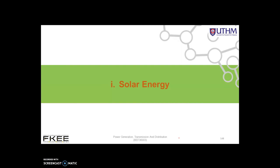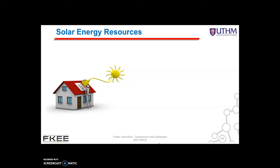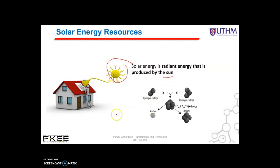Solar energy is the most important source of energy available to the Earth and its inhabitants. Solar energy is radiant energy produced by the sun. The sun makes energy in its inner core in a process called nuclear fusion. The process of fusion most commonly involves hydrogen isotopes combining to form a helium atom and a neutron, with transformation of matter emitted as radiant energy.